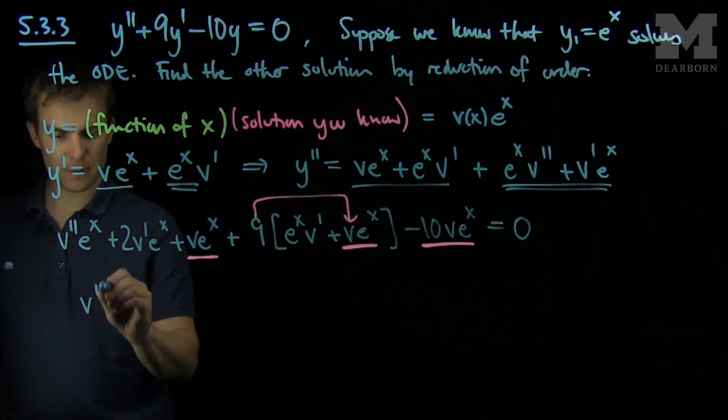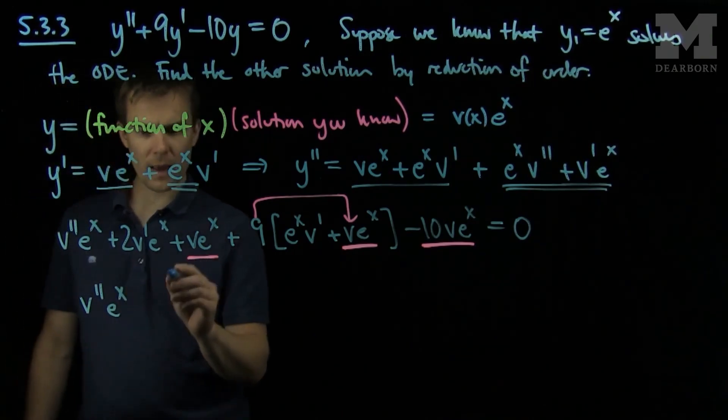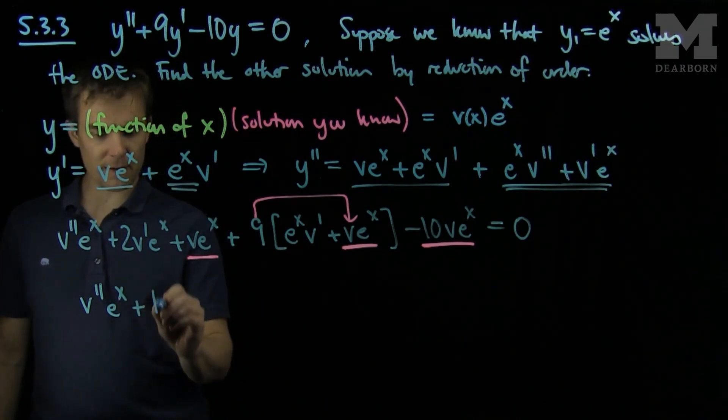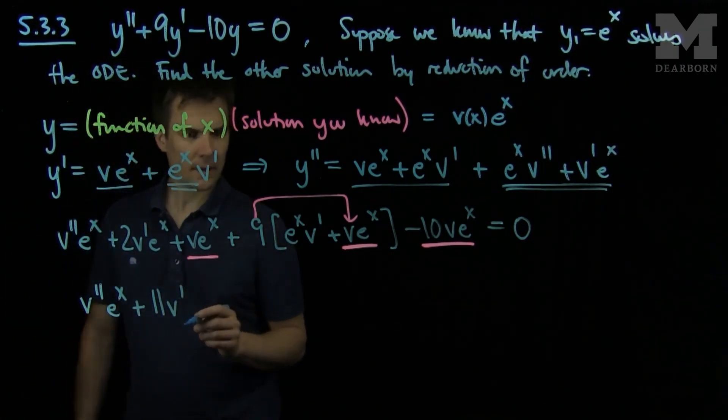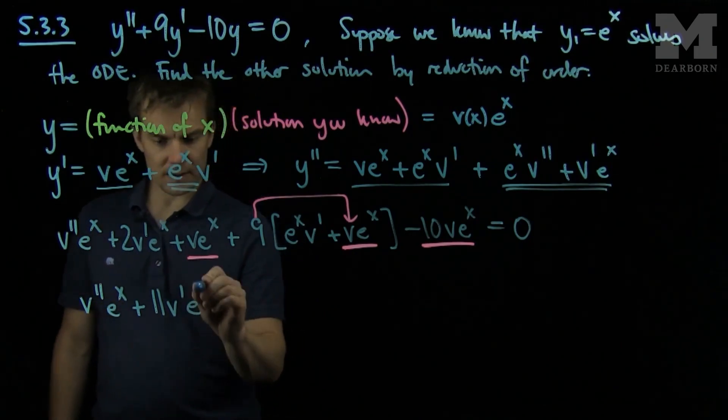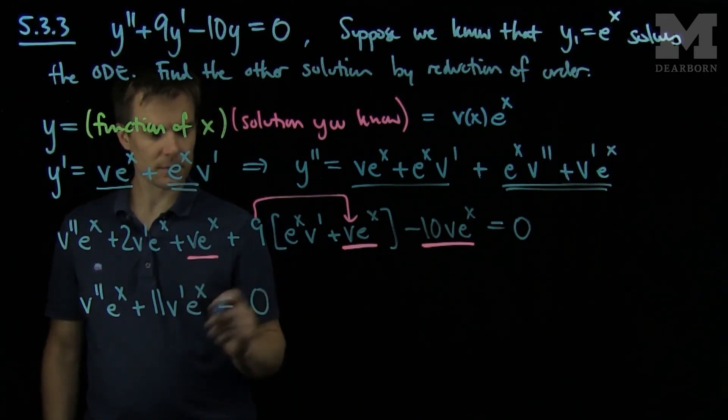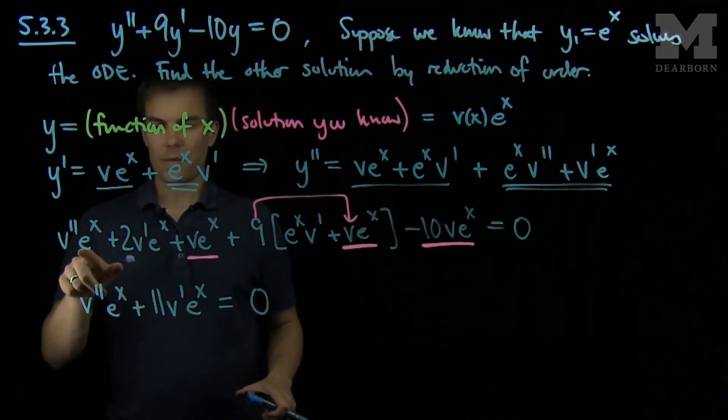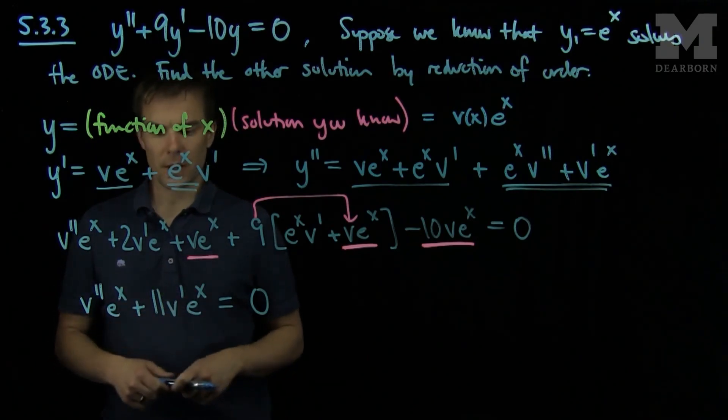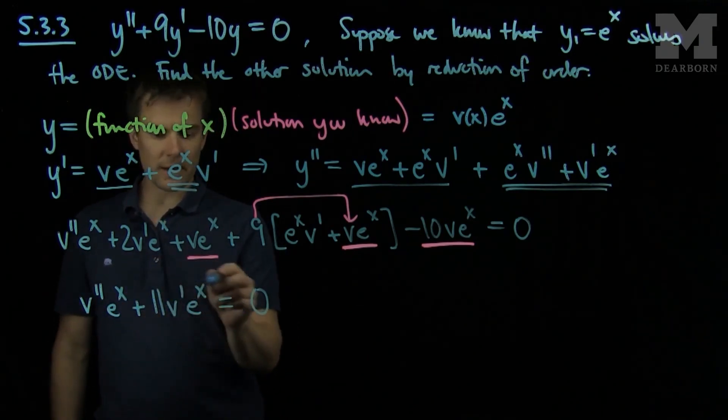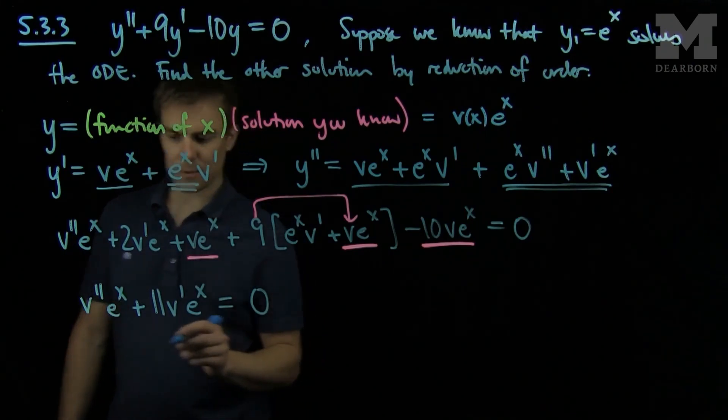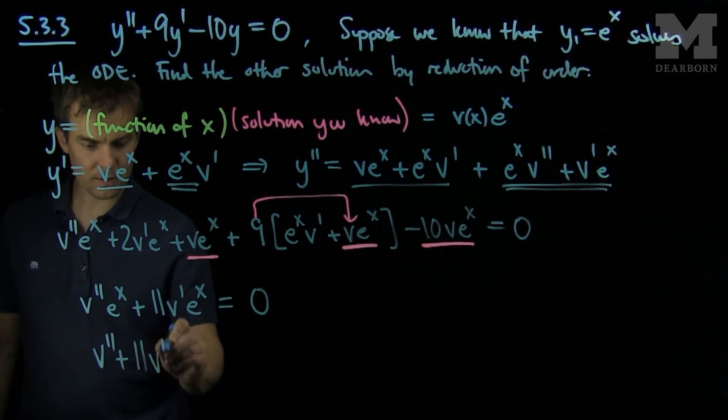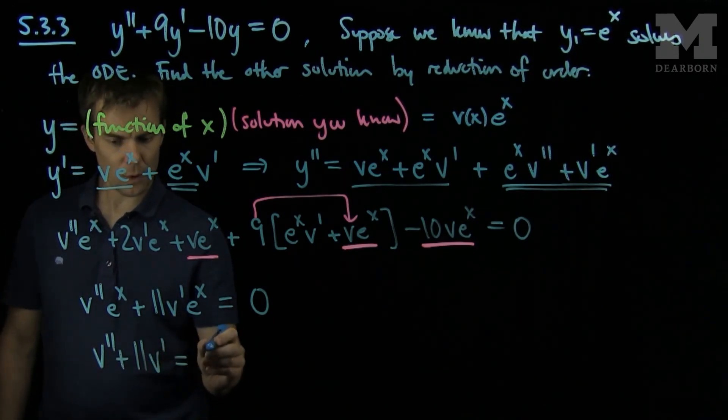And so we'll be left with the following ODE. We'll have v double prime e to the x, and then I'll have a 2 v prime and then a 9 v prime so that's going to give me 11 v prime e to the x equals 0. Now we've accounted for all of our terms on this side of the equation, and so we notice that there's an e to the x on both terms so we can cancel out by that. We'll have v double prime plus 11 v prime equals 0.